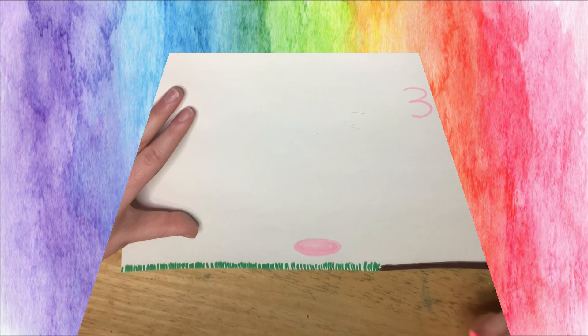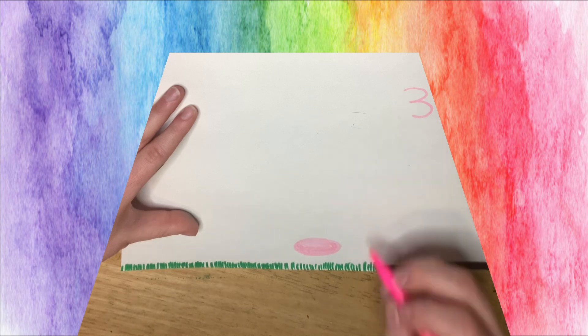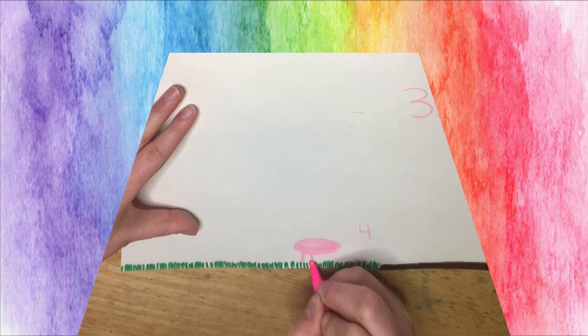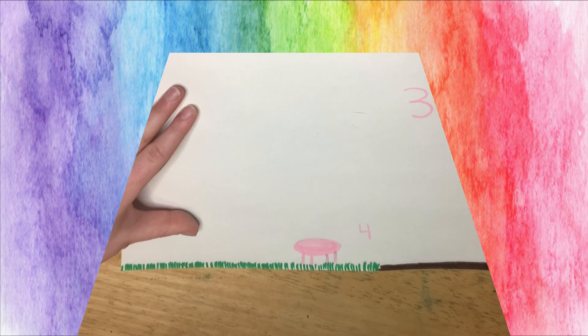Next, let's draw our pig's legs. How many legs do pigs have? Pigs have four legs. So we're going to draw one, two, three, four lines. Now we're going to draw one squiggly pigtail.